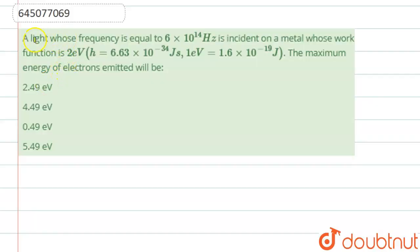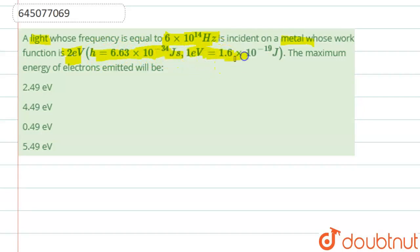Well hello students, now we are going to see this question. The question says that a light whose frequency is 6 x 10 to the power 14 hertz is incident on a metal whose work function is 2 electron volt. The maximum energy of the electrons emitted will be?